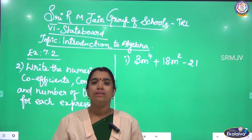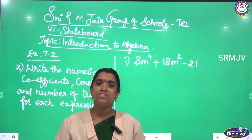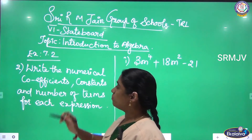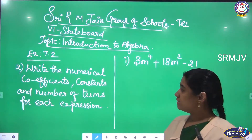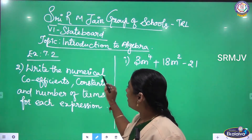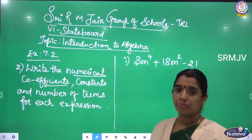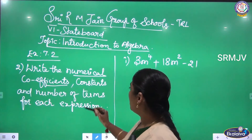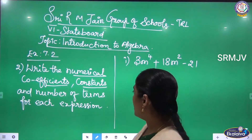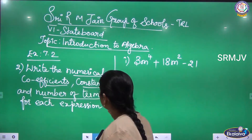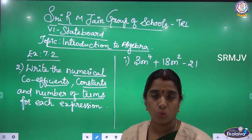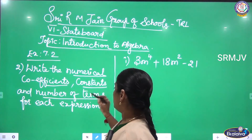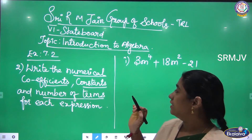Shri Gurubhyo Namaha. Welcome to our online teaching academy Ekhalaiva. Now I am going to discuss exercise 7.2. Children, write the numerical coefficients. I am going to write here: numerical coefficients and constants, as well as the number of terms — whether it is one term, two terms, or three terms. So, types of expression. We are going to write here. Listen.